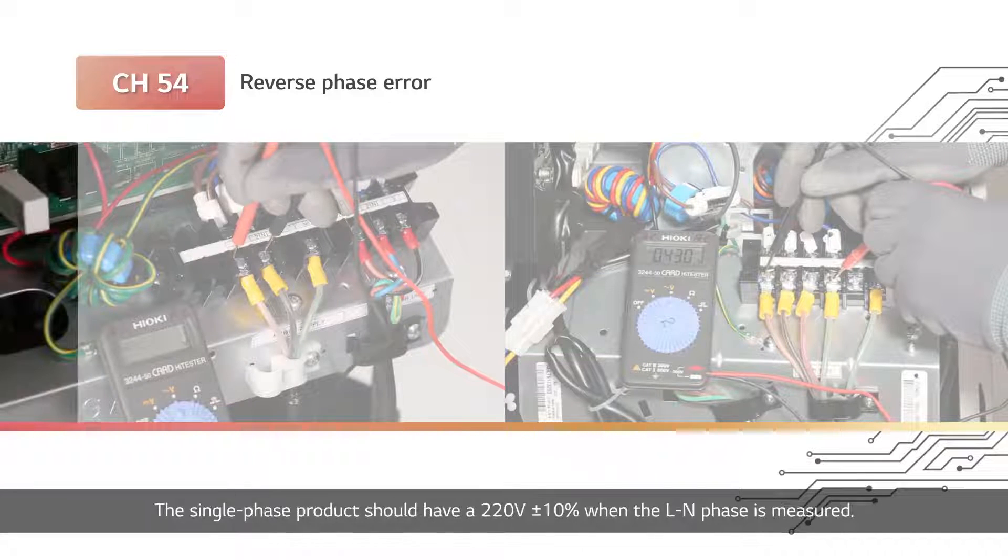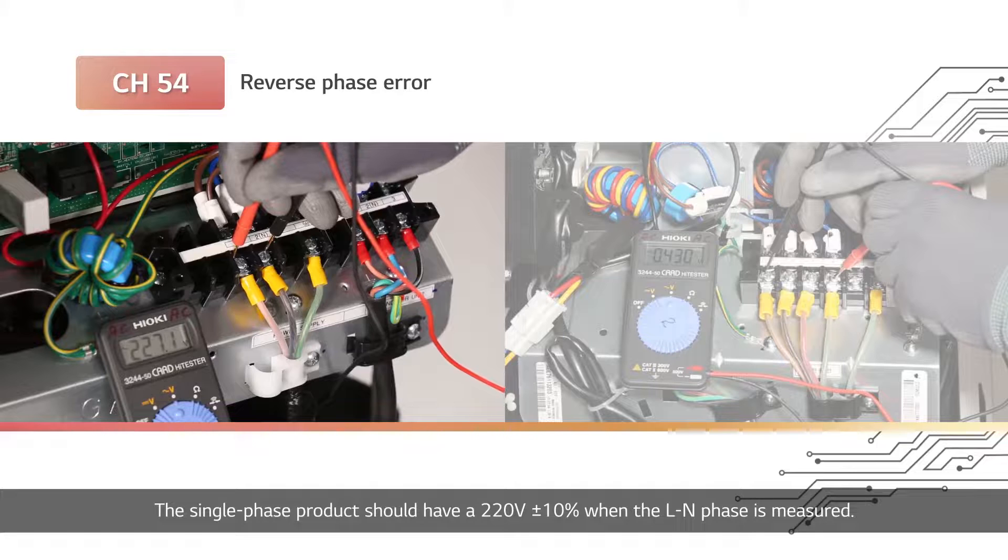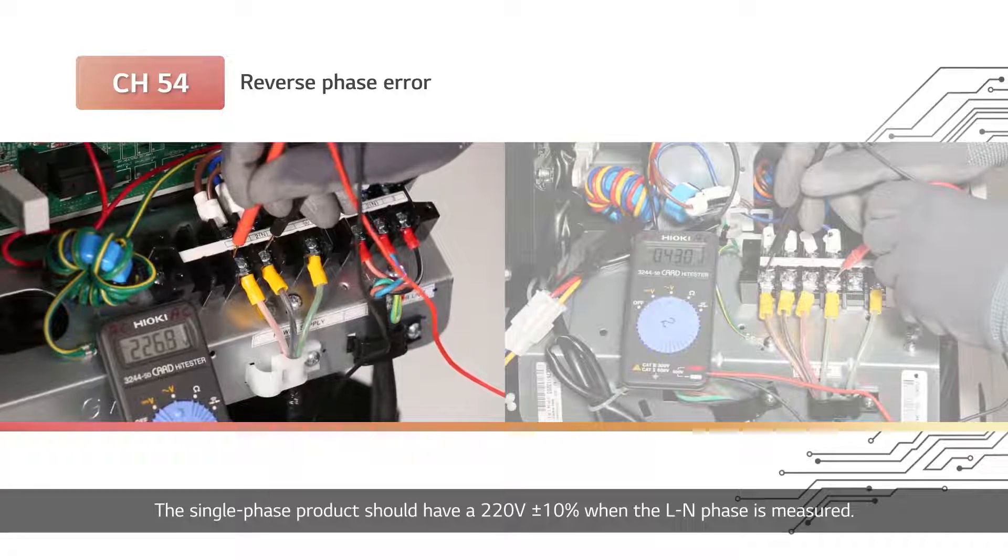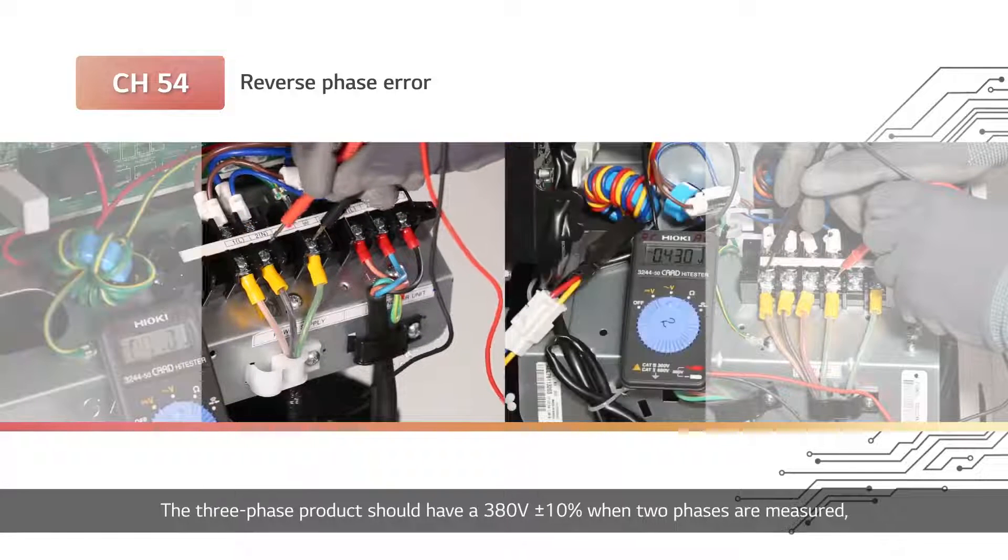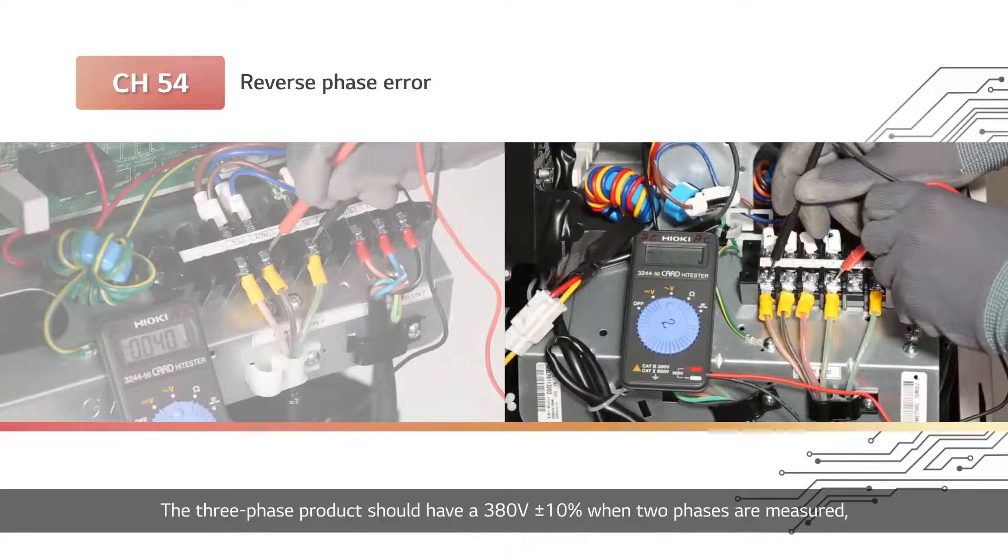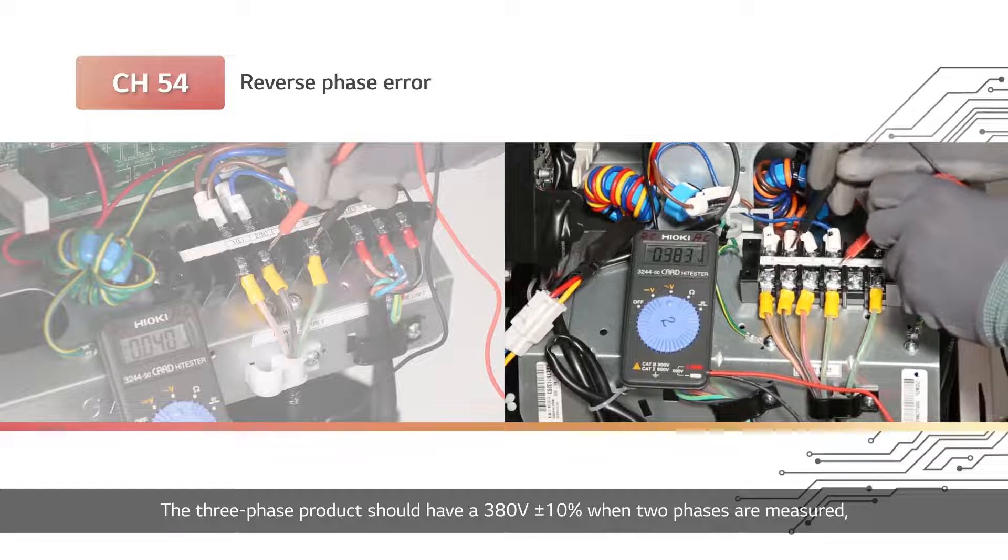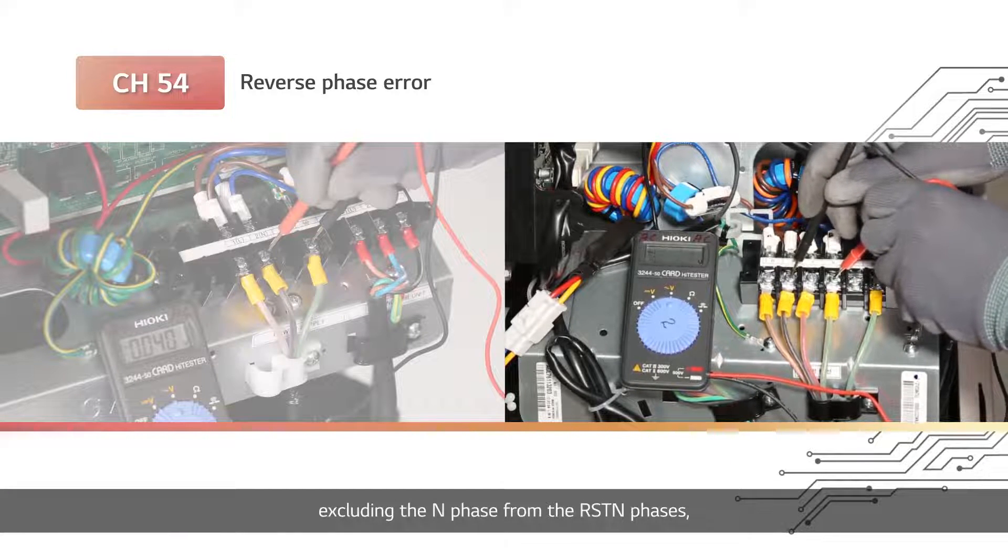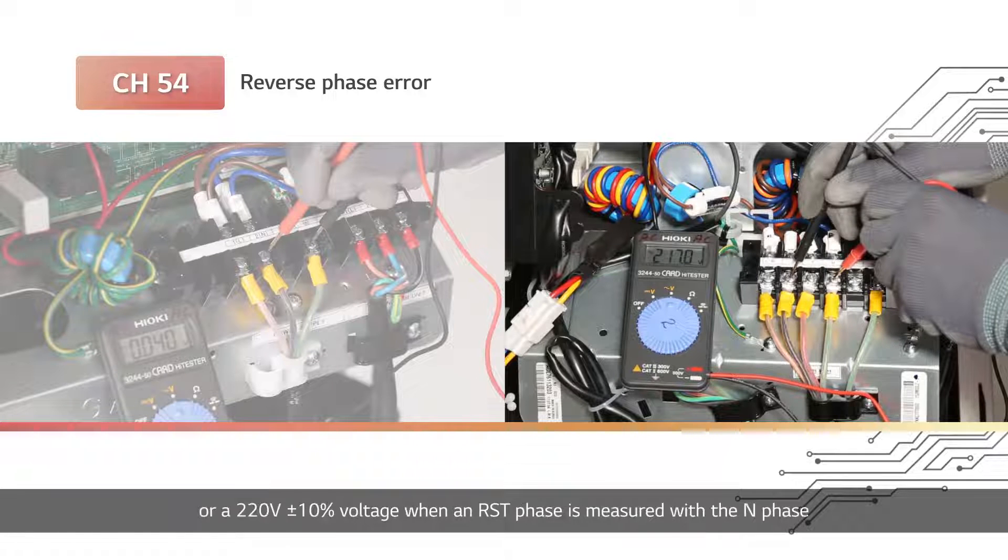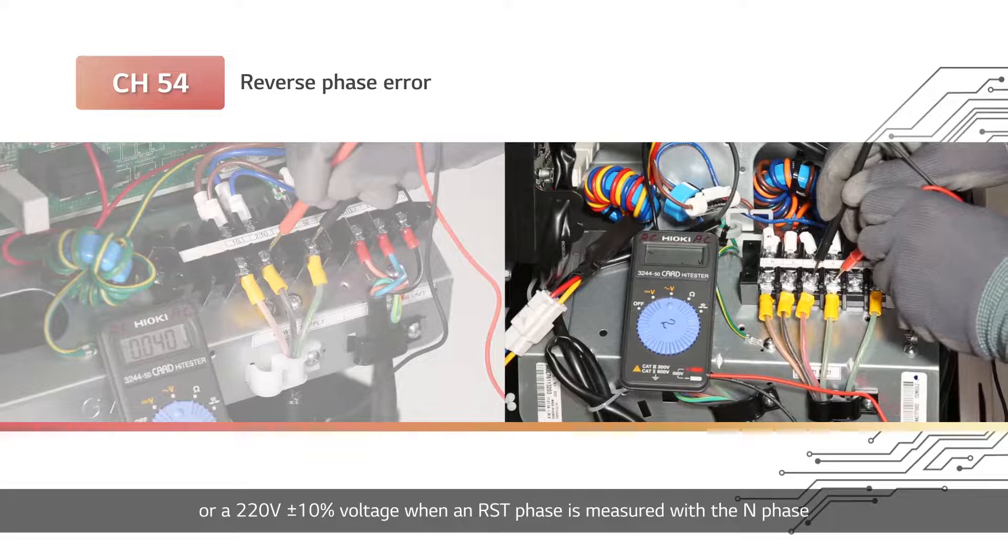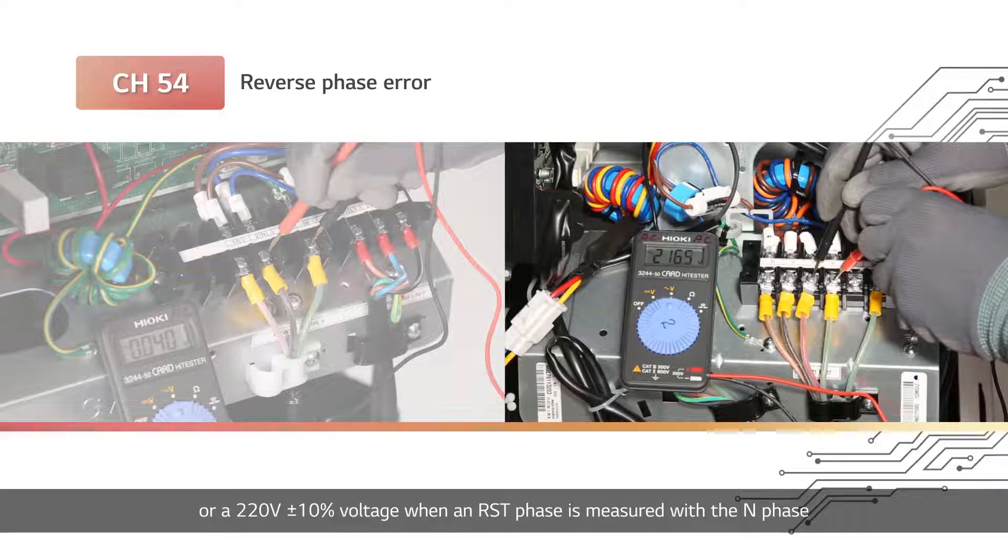The single-phase product should have a 220V plus minus 10% when the L-N phase is measured. The three-phase product should have a 380V plus minus 10% when two phases are measured, excluding the N phase from the R-S-T-N phases, or a 220V plus minus 10% voltage when an R-S-T phase is measured with the N phase.